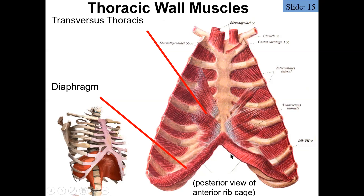One of the more important muscles is the diaphragm — this large dome-shaped muscle that completely separates the thoracic cavity on top from the abdominal cavity below. It is very much involved in the breathing process, with its relaxation and contraction allowing for inspiration and facilitating breathing.